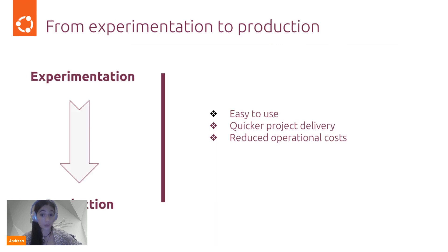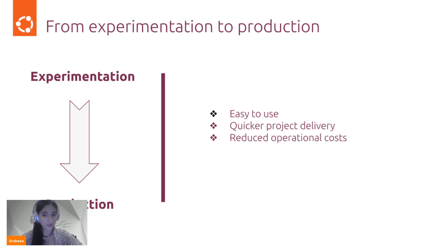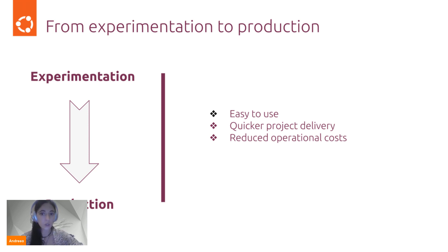Charmed Kubeflow 1.7 is a release that helps professionals achieve their goals more easily. It leads to both faster experimentation and quicker deployment to production. Overall, it increases data scientists' productivity and reduces their manual tasks. Cost-conscious organizations can also use it to decrease operational costs and see a faster return on investment from their AI projects.